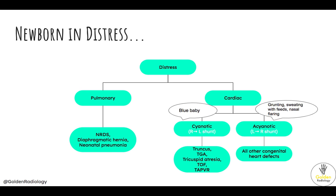The babies with acyanotic heart disease are not going to present with early cyanosis. Instead, they'll present with nasal flaring, grunting, and a very good hint is sweating with feeds. These babies have a left-to-right shunt, so they won't have any issues getting oxygenated blood to their body. However, they have a ton of blood volume being shunted into the pulmonary system. If uncorrected, these left-to-right shunts result in pulmonary hypertension and eventually Eisenmenger syndrome, which is reversal of the shunt into a right-to-left shunt, and these children will then present with cyanosis.